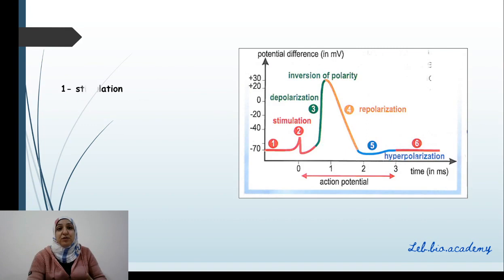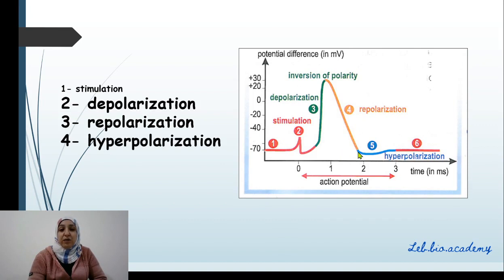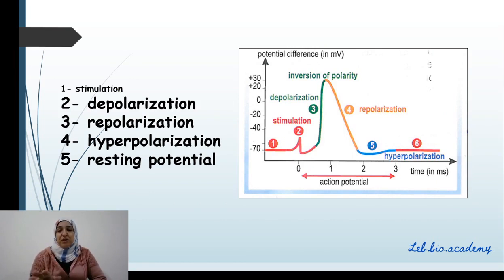What you have to know also is the different parts of this action potential. You simply have to memorize them. Here we made the stimulation. This increase in the potential difference is called depolarization. This decrease is called repolarization. This part, the blue part, is called hyperpolarization. And then, we are back to resting potential that is constant at minus 70 millivolt. So, whenever they ask you to schematize an action potential, you have to draw this and label this. And don't forget to write down the title, which is action potential.